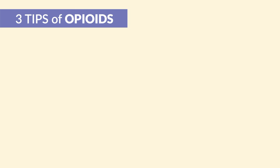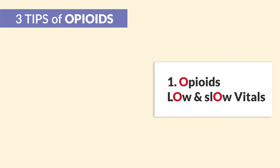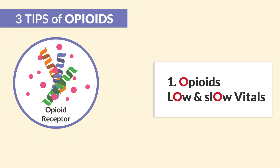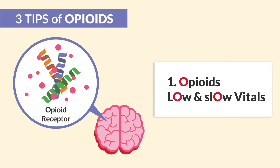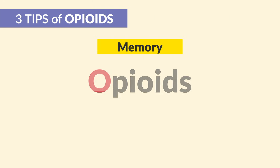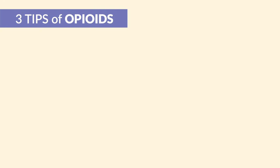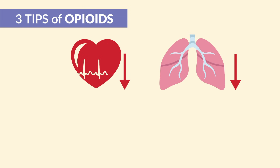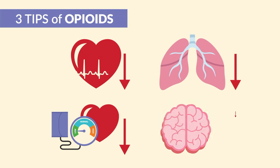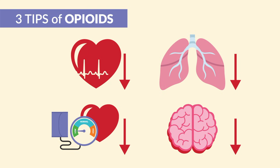Alright guys, let's begin. Here are the three tips for opioids. Number one: think O's for low and slow vitals. Opioids are CNS depressants, meaning they bind to the opioid receptors in the brain, which sedates the body. So the memory trick is opioids cause low and slow vitals — low heart rate, low respirations, low BP, and a slow brain — which makes them very deadly.